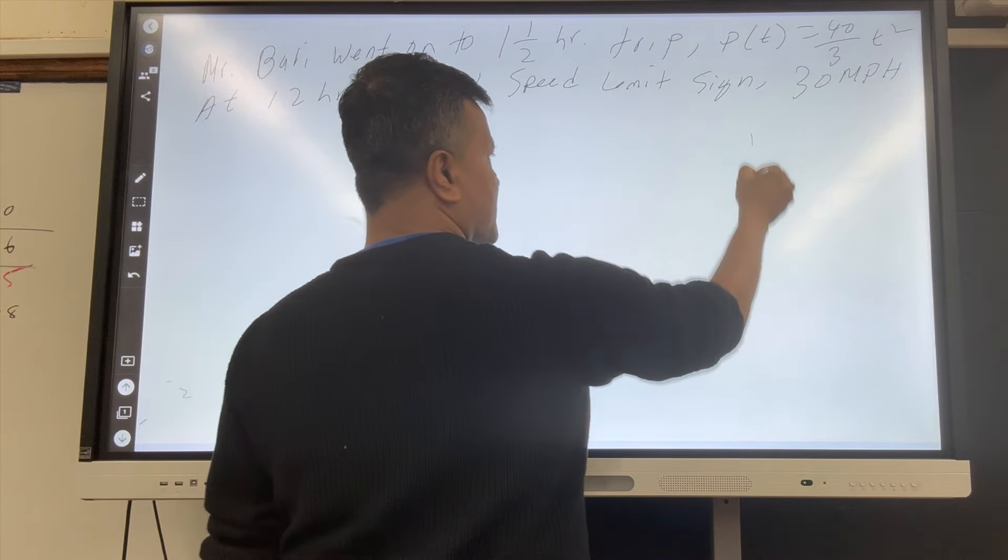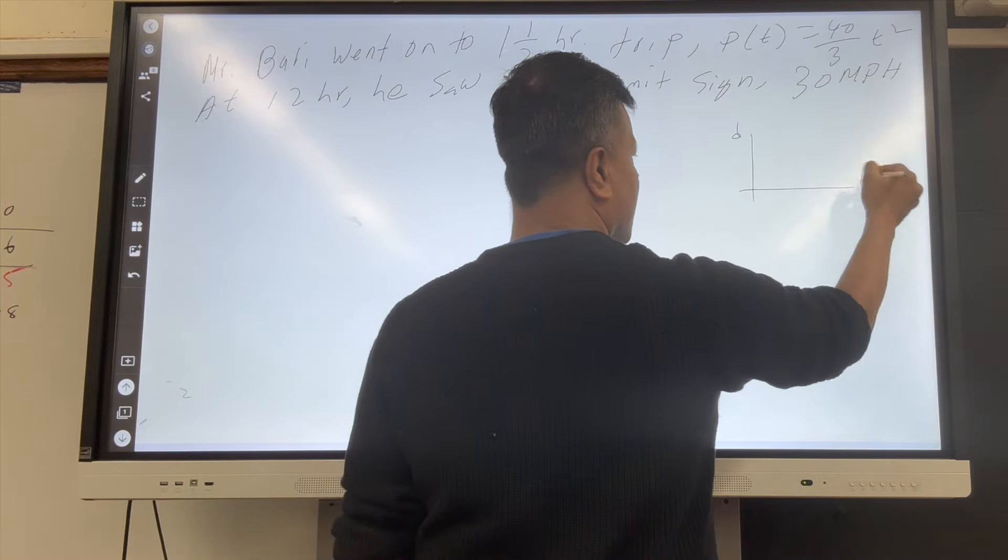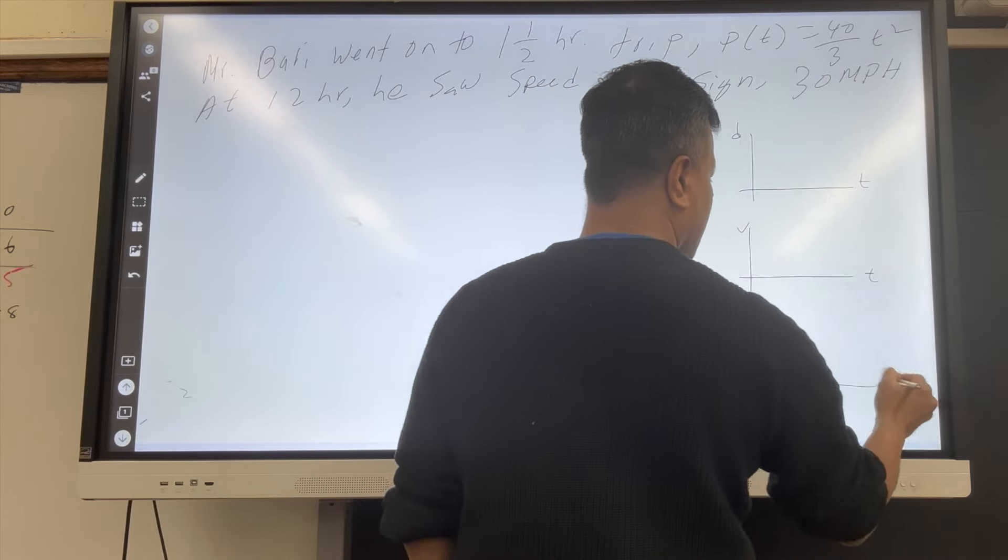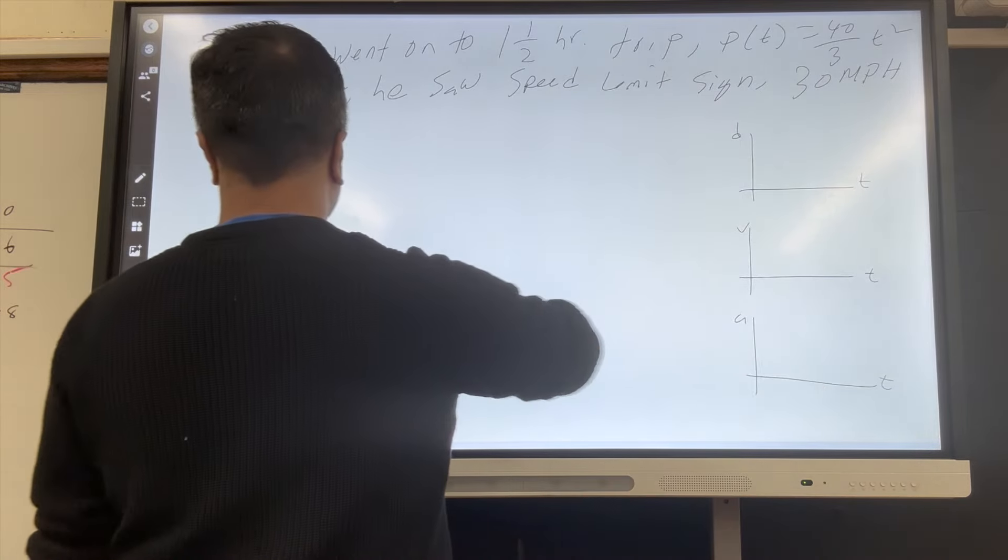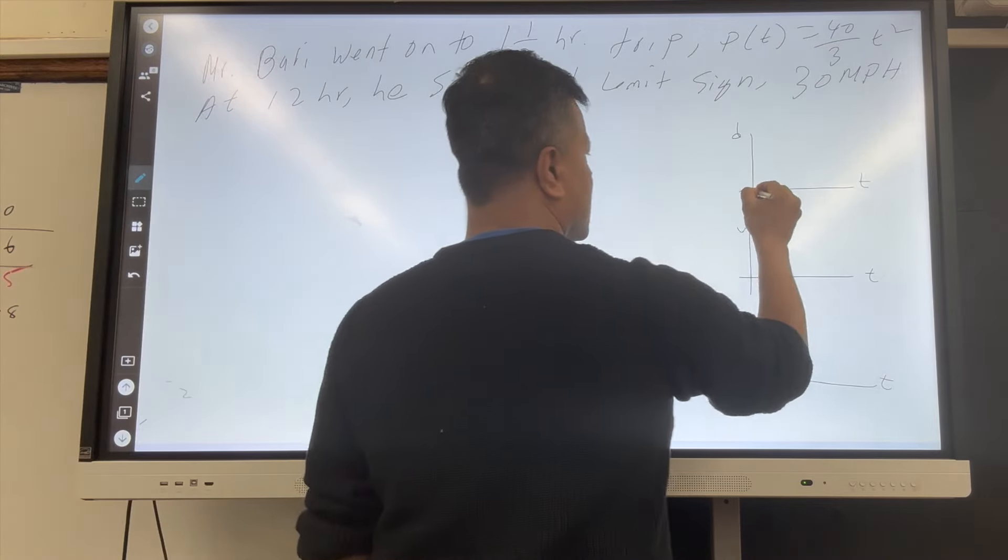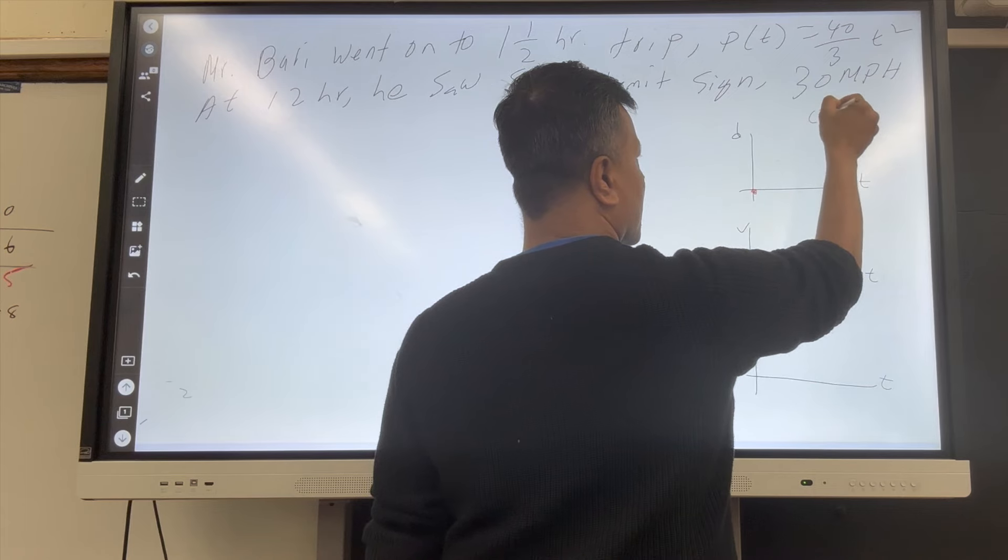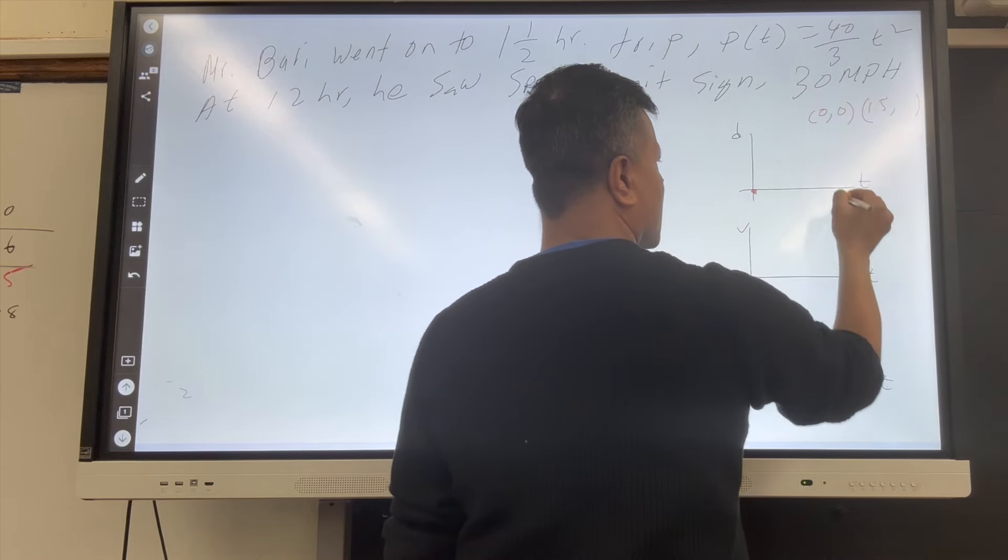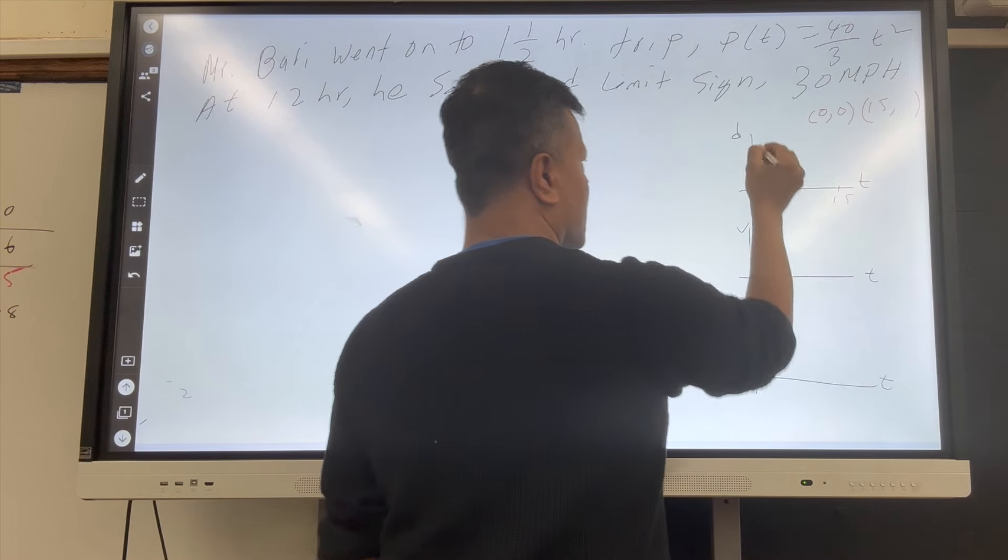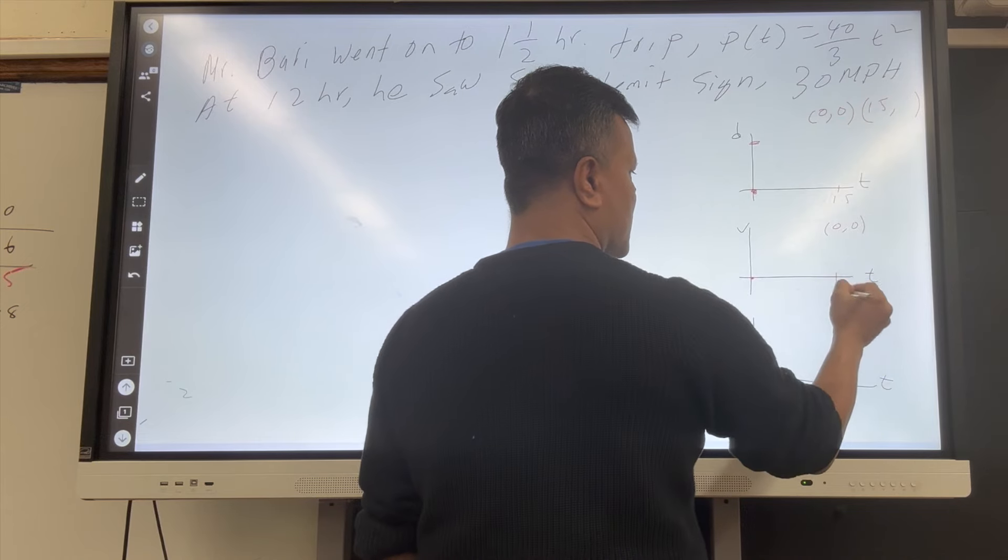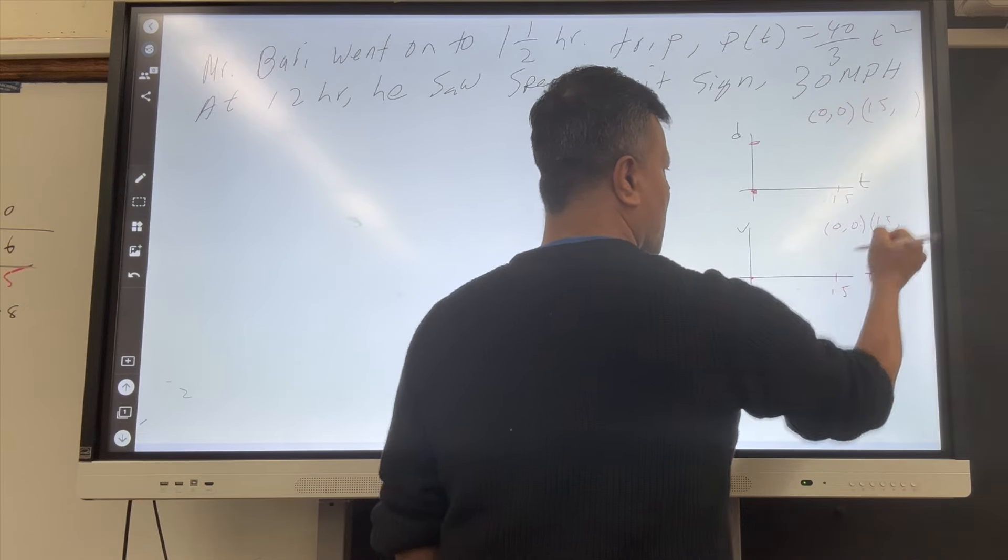First thing first, DT, VT, and AT. To draw the graph, we're going to have to find both points. This is 0, 0. What is the other one? 1.5 comma what? We don't know this one.